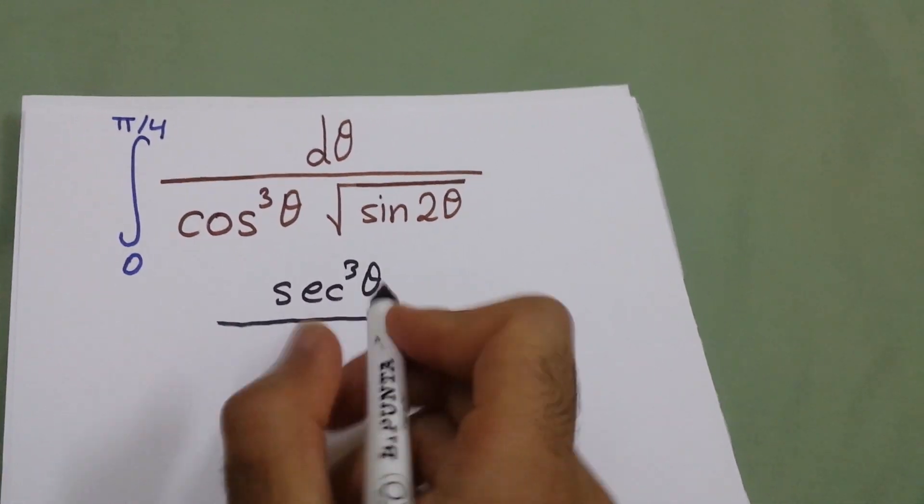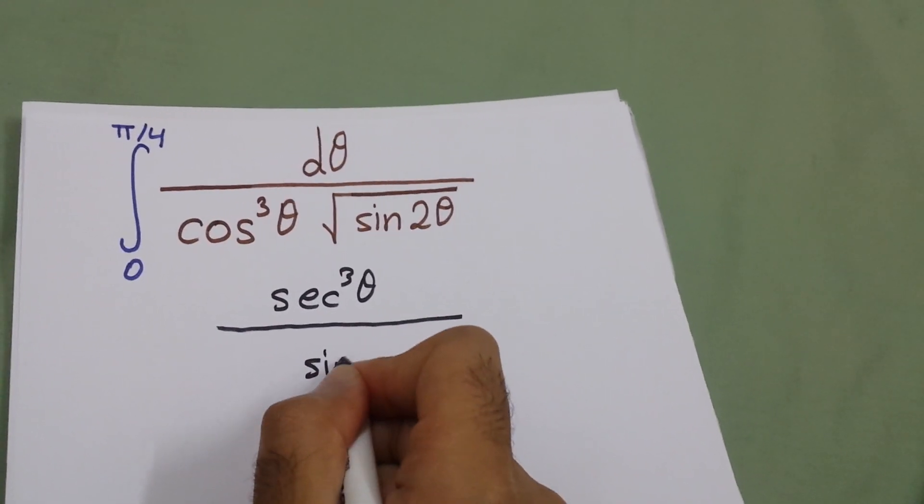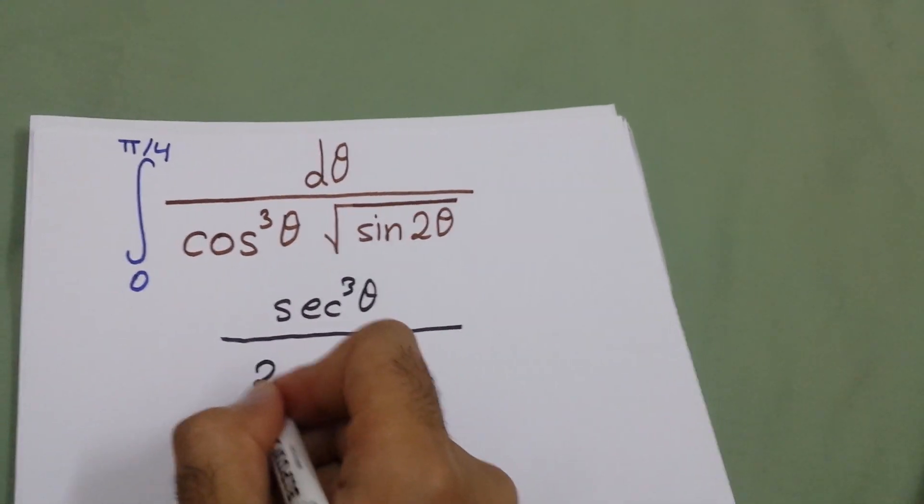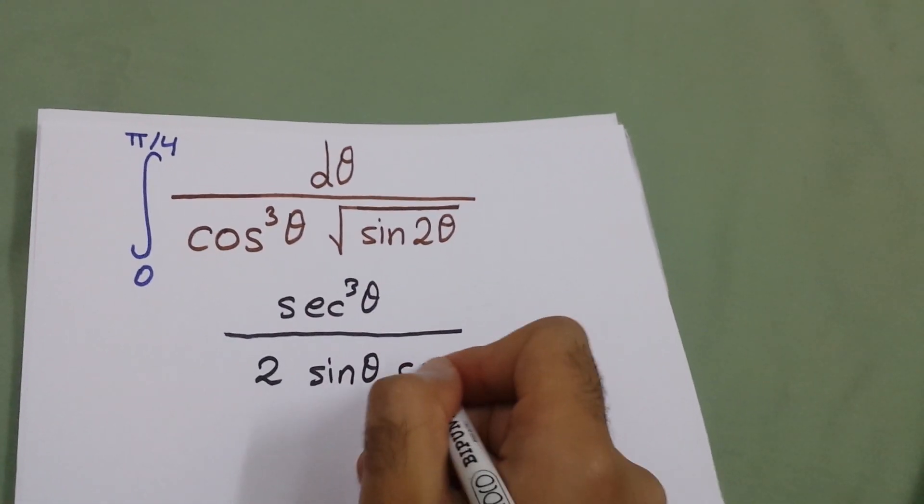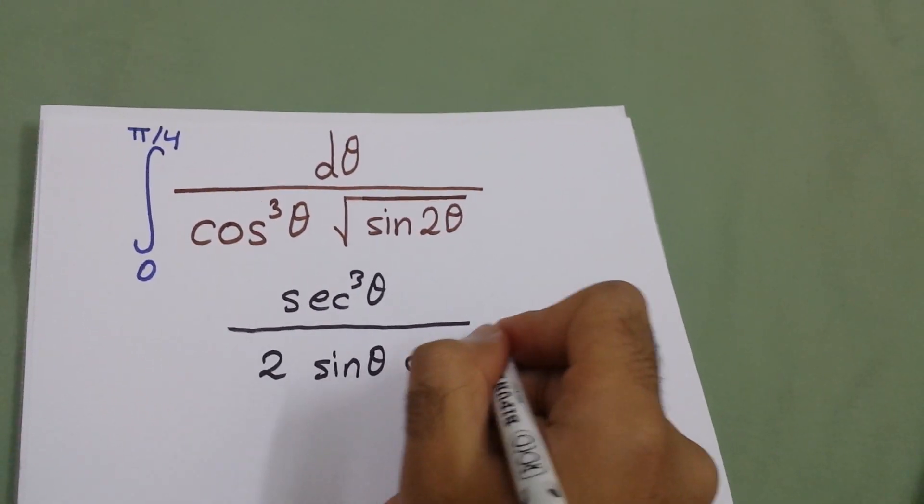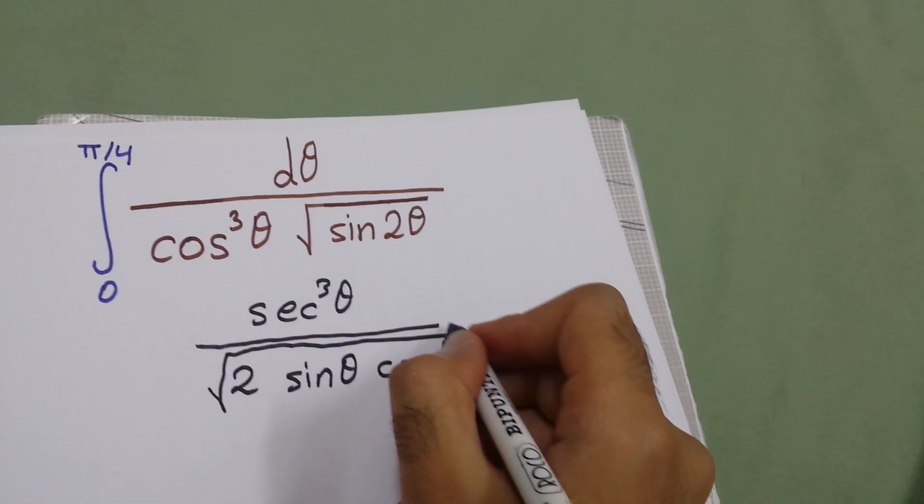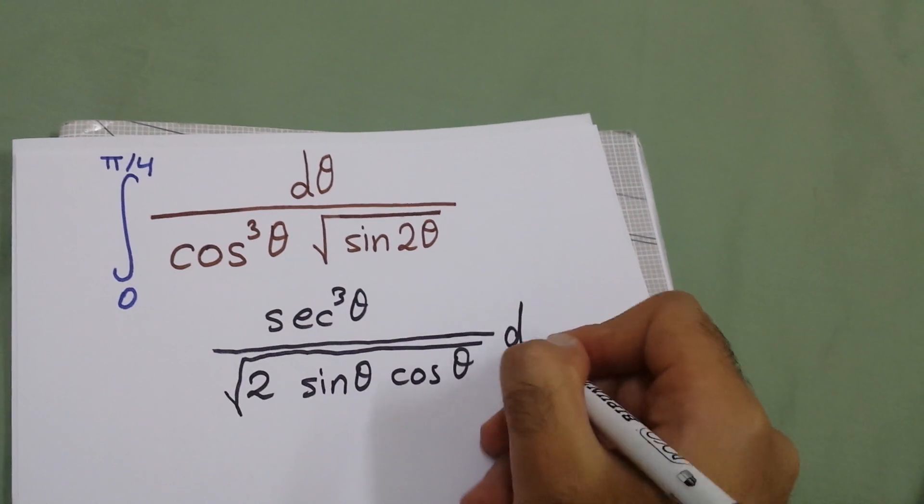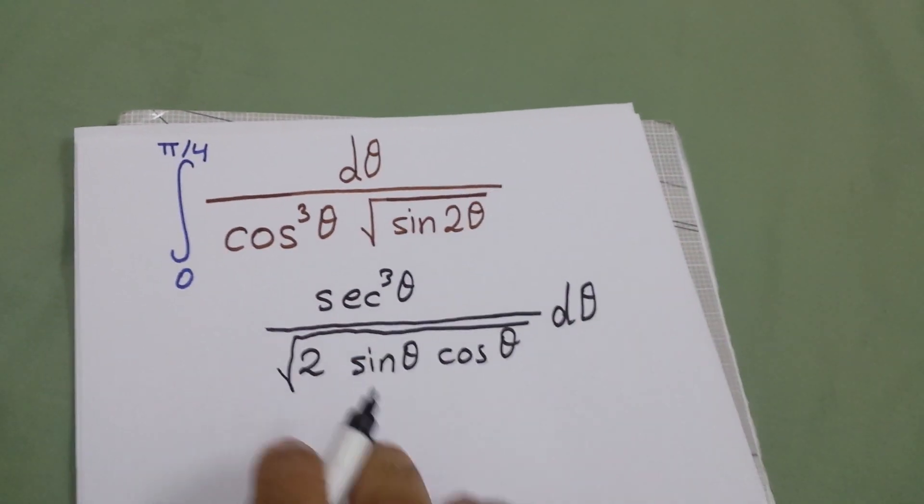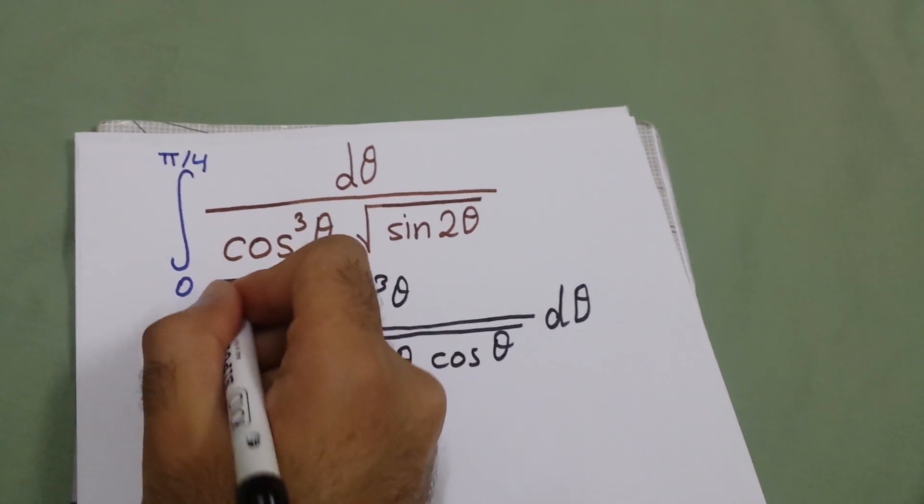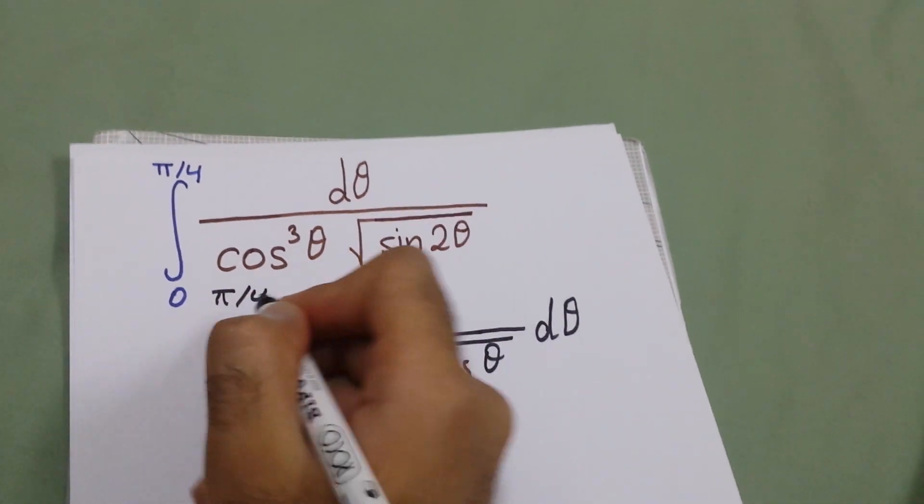sine 2θ. We can write this as 2 sine θ cosine θ under square root, dθ from 0 to π over 4.